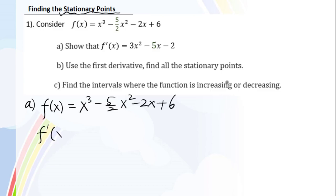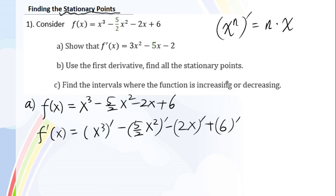For f prime of x equals x to the third power prime minus 5 over 2x squared prime minus 2x prime plus 6 prime. We know we got to use x to the nth power prime equals n times x to the n minus 1th power. For example, x squared prime equals 2x, x prime equals 1.